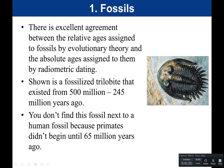A fossilized trilobite existed from 500 million to 245 million years ago. You would not find this fossil next to human fossils because primates didn't begin until 65 million years ago. Using relative dating, the older fossil would be on the bottom, newer fossils on top. Because humans evolved much later than this trilobite, they're not found in the same rock formations — showing good agreement between relative dating and absolute dating.